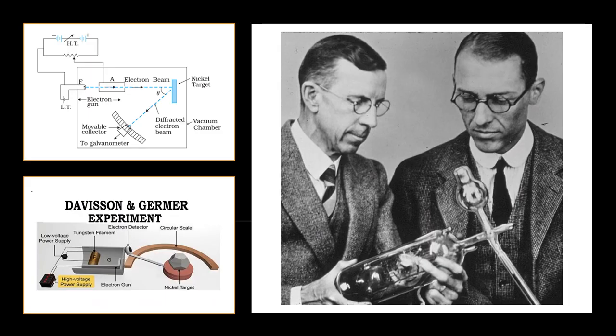The wave nature of electrons was first experimentally verified by Clinton Joseph Davisson and Lester Germer in 1927, and independently by GP Thomson in 1928. Davisson and Thomson shared the Nobel Prize in 1937 for their experimental discovery of diffraction of electrons by crystals. The experimental arrangement used by Davisson and Germer consists of an electron gun which comprises of a tungsten filament coated with barium oxide and heated by a low voltage power supply. Electrons emitted by the filament are accelerated to a desired velocity by applying suitable potential voltage from a high voltage power supply. They are made to pass through a cylinder with fine holes along its axis, producing a fine collimated beam. The beam is made to fall on the surface of a nickel crystal. The electrons are scattered in all directions by the atoms of the crystal. The intensity of the electron beam scattered in a given direction is measured by the electron detector, collector.